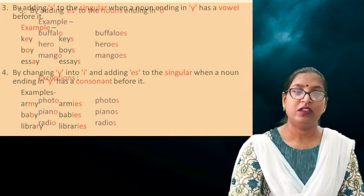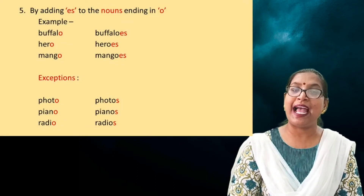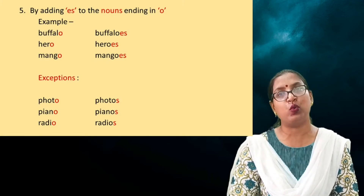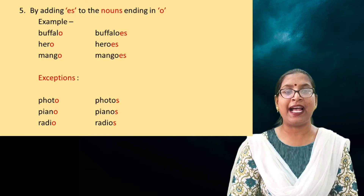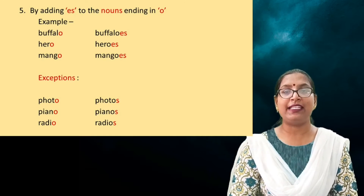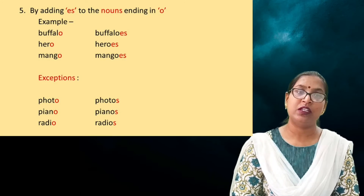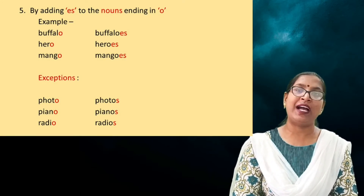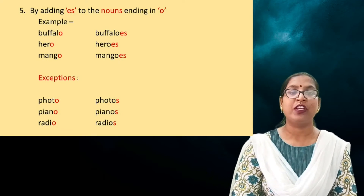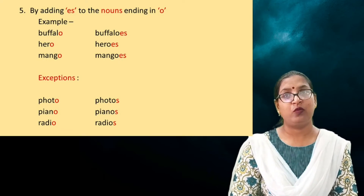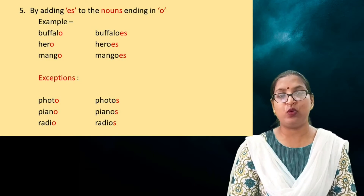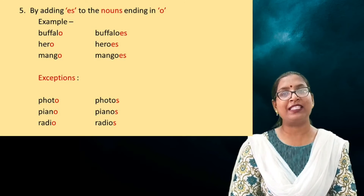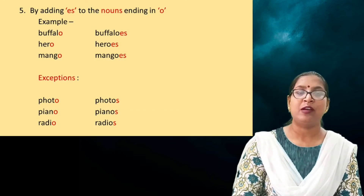Rule five: by adding ES to nouns ending in O. When a word is ending in O, we add ES with it to make the plural form. For example: 'buffalo' plus ES becomes 'buffaloes'; 'hero' plus ES becomes 'heroes'; 'mango' plus ES becomes 'mangoes'.